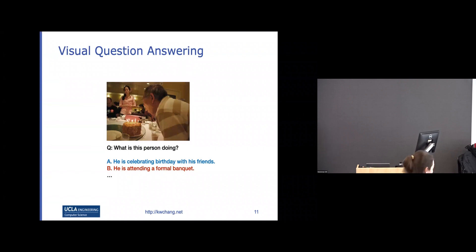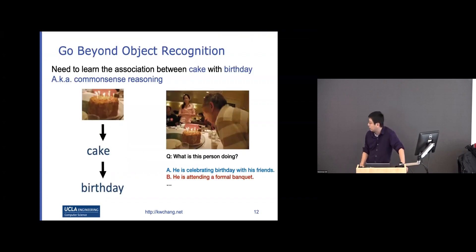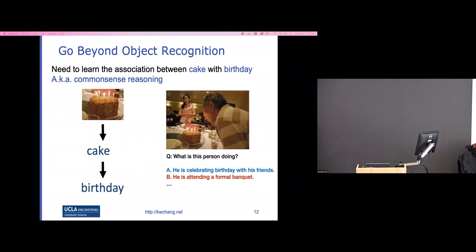The intuition is we need to leverage semantics and context of the image to identify certain visual concepts. For example, if someone is near a cake, this is likely a birthday party — but that's not something you can find as a visual annotation in standard datasets. From text, if we can identify a cake and know that cakes are associated with birthdays, the model can use that to arrive at the right answer.